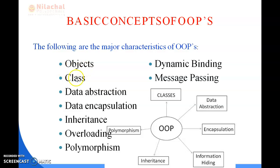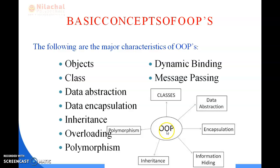The characteristics are Objects, Classes, Data Abstraction, Data Encapsulation, Inheritance, Polymorphism, Overloading, Dynamic Binding, and Message Passing. All these things are interrelated to Object Oriented Programming. Without these, we cannot be able to perform Object Oriented Programming.